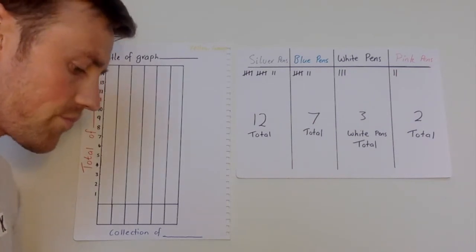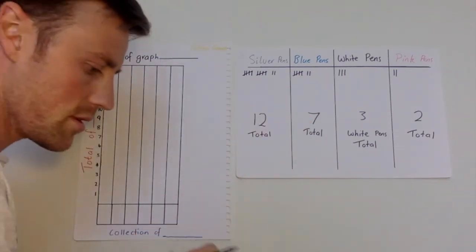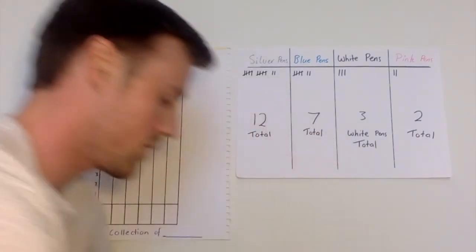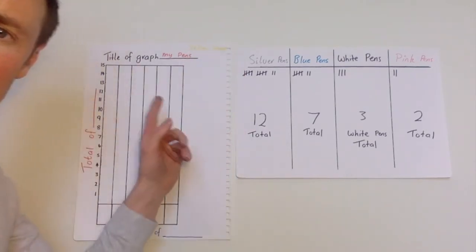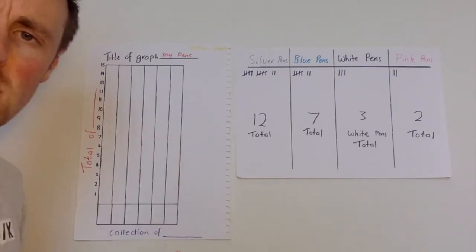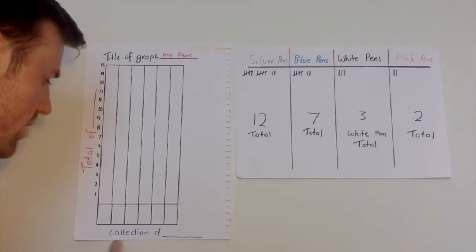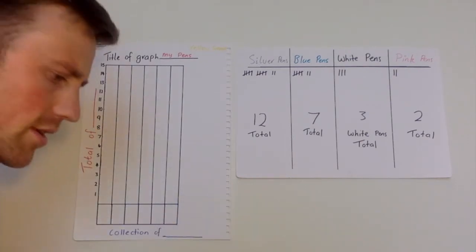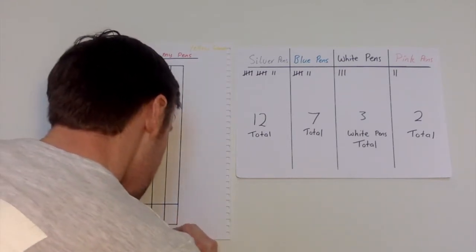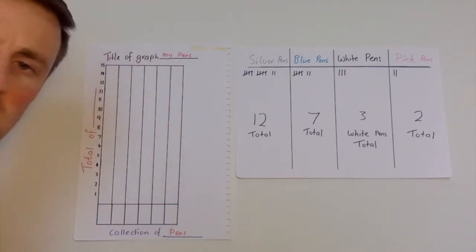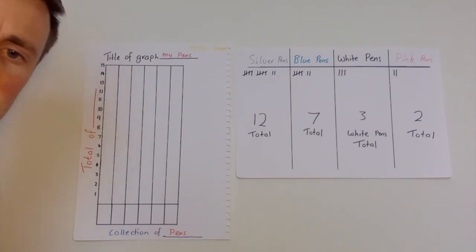The first thing you need to do is write a few headings. The title of my graph is 'My Pens.' It's important to put a title on a graph so people know what your graph is about. Then go down to the bottom where it says 'Collection of' — we need to say what we're actually collecting. This is a collection of pens, so if you've chosen books, you write 'books' there.